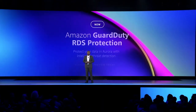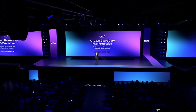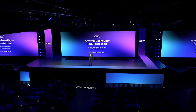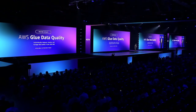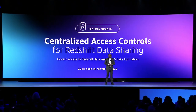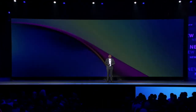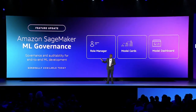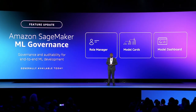Built for Amazon Aurora, I'm excited to announce the preview of GuardDuty RDS Protection, which provides intelligent threat detection in just one click. I'm also pleased to share the preview of AWS Glue Data Quality, a new feature of AWS Glue. Today I'm also pleased to introduce a new feature in Redshift data sharing — centralized access controls that allow you to govern your Redshift data shares using the Lake Formation Console. And we're bringing three new ML governance capabilities for Amazon SageMaker: SageMaker Role Manager, Model Cards, and Model Dashboards.